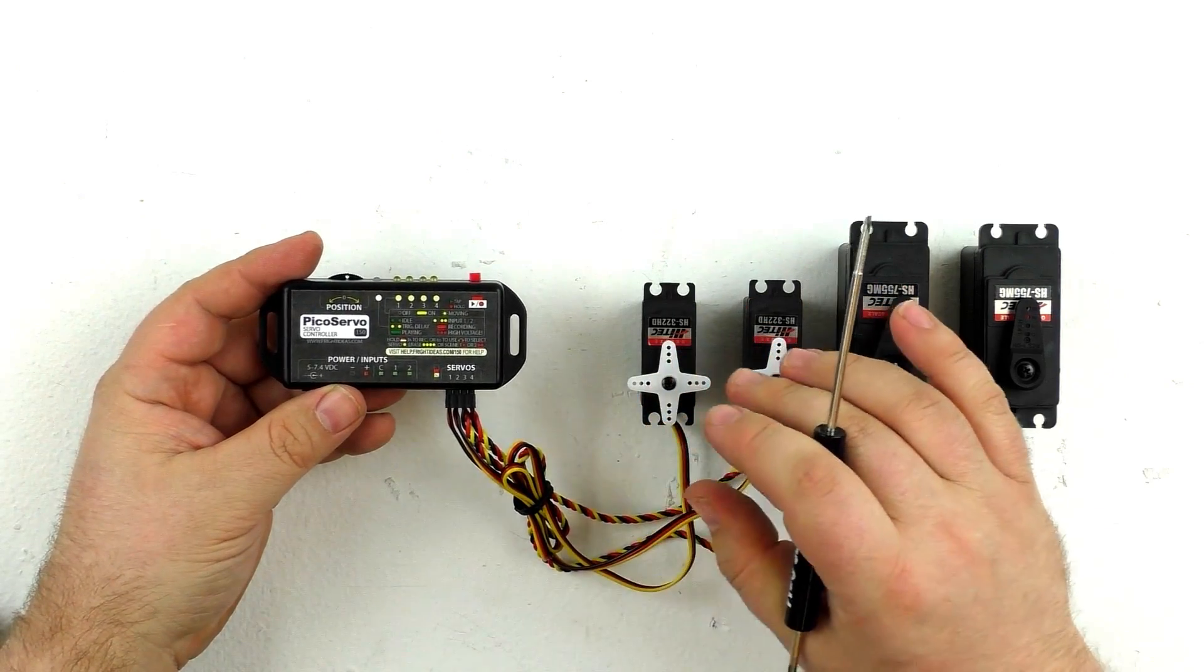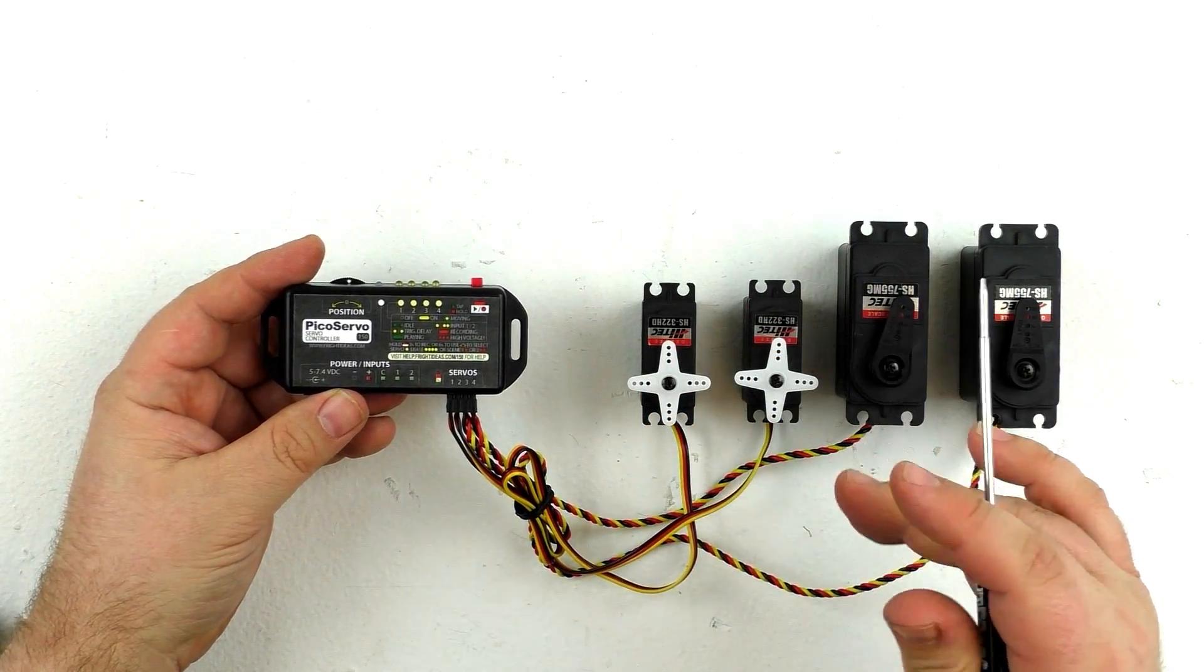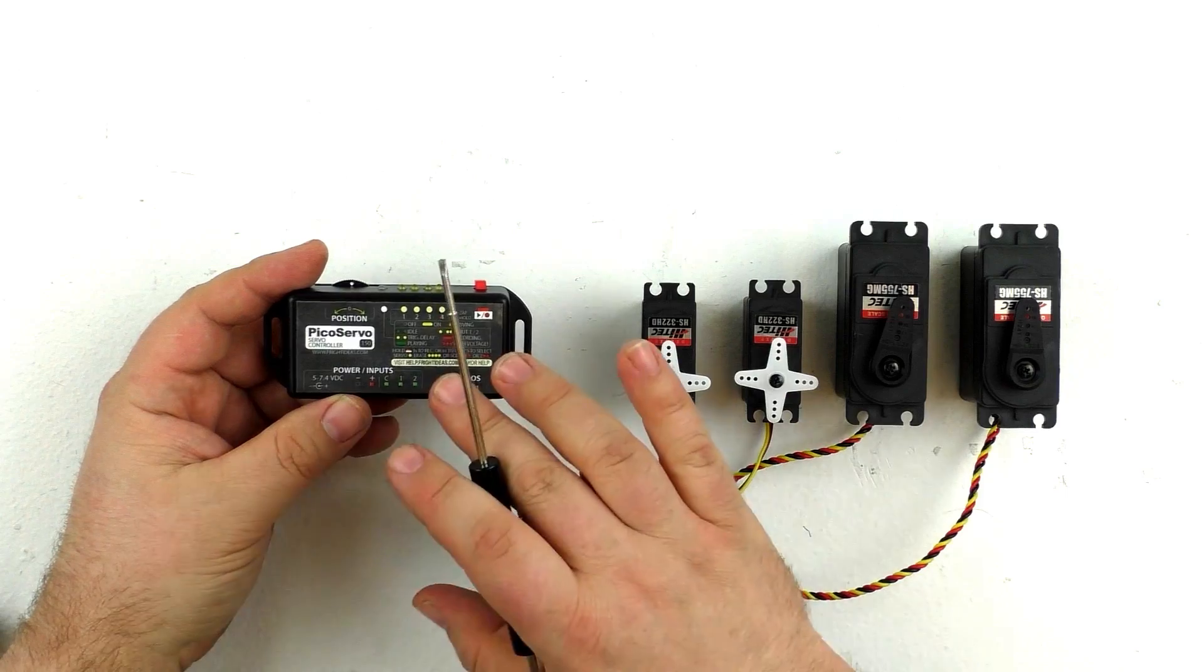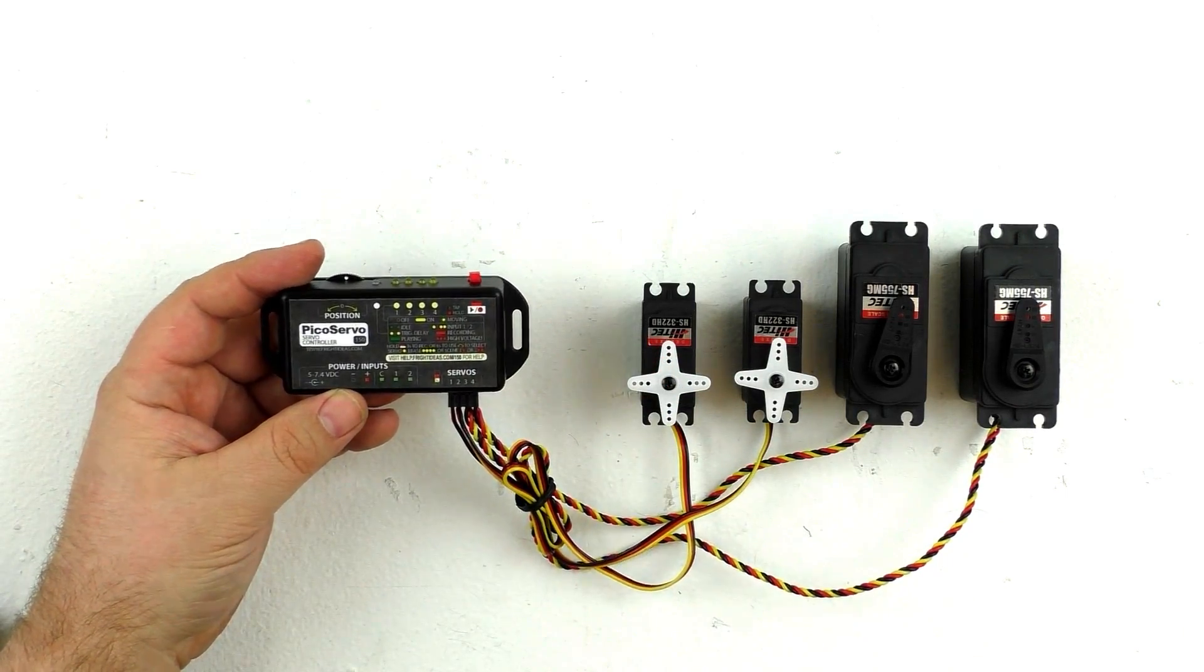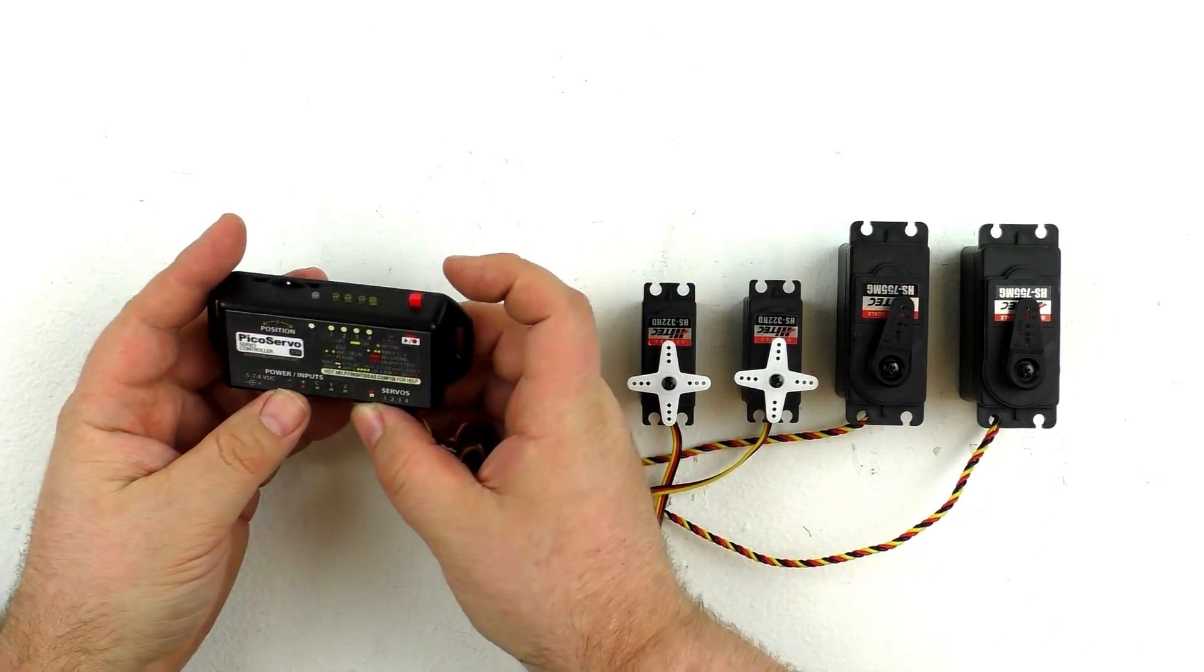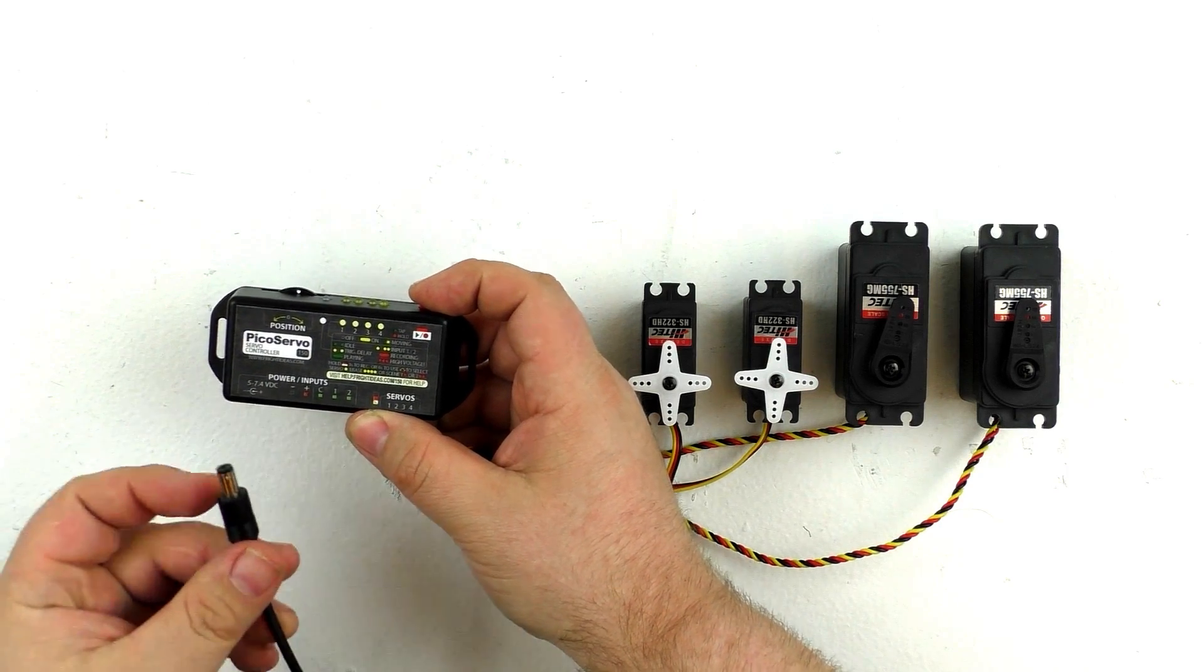The first thing you're going to want to do is set your limits for your servos. To do that, we're going to go into the settings menu of the PicoServo. We're just going to hold down the record button and plug in our power.